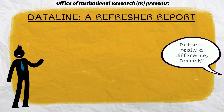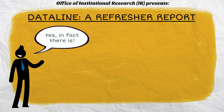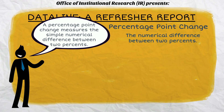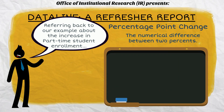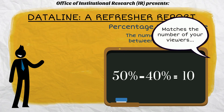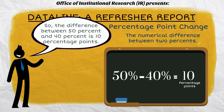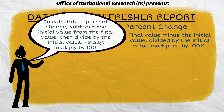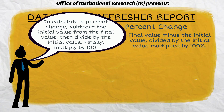Is there really a difference, Derek? Yes, in fact, there is. A percentage point change measures the simple numerical difference between two percentages. Referring back to our example about the increase in part-time student enrollment, the numerical difference between 50% and 40% is 10. So the difference between 50% and 40% is 10 percentage points. To calculate a percent change, subtract the initial value from the final value and divide by the initial value. Finally, multiply by 100.